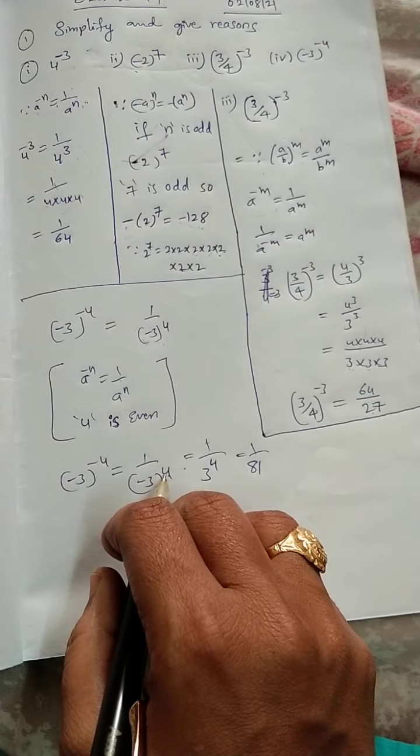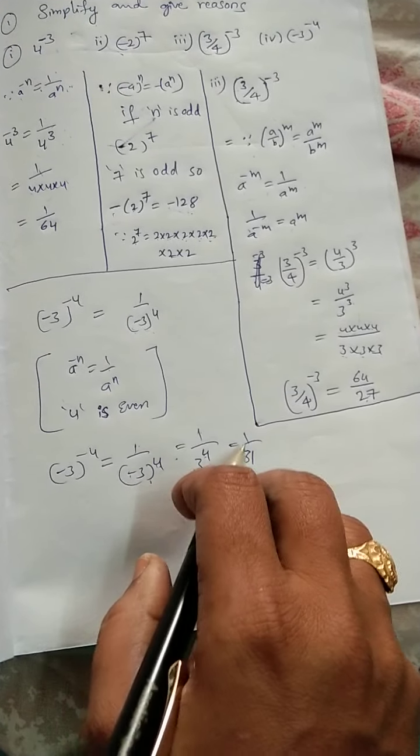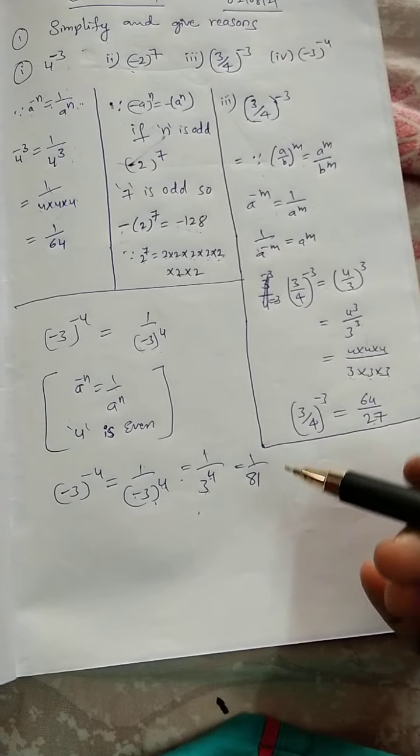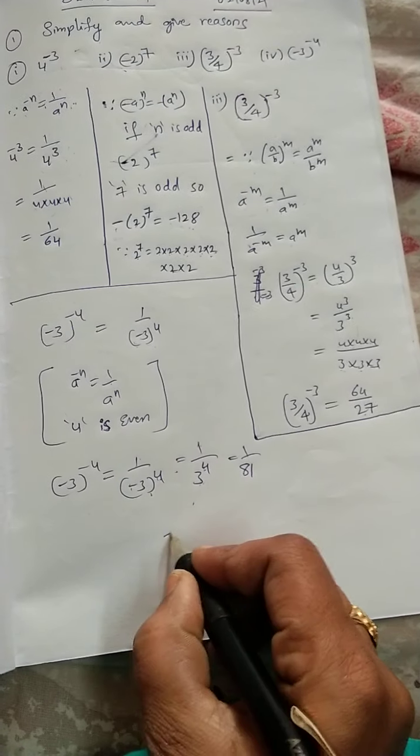Why? Because 4 is even number. So, it will become positive. So, if you multiply 3, 4 times, it will get 81.